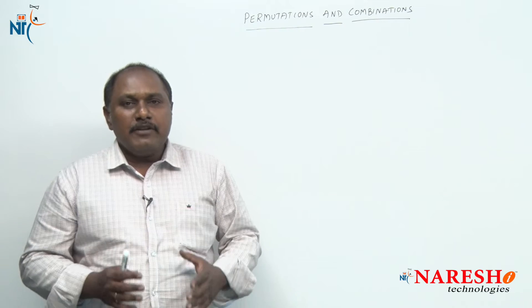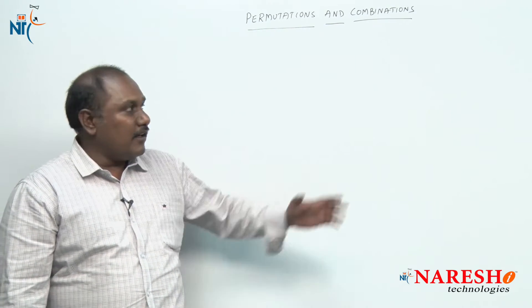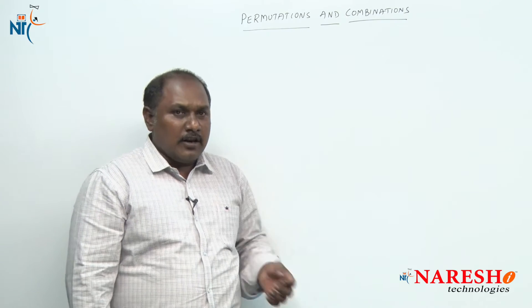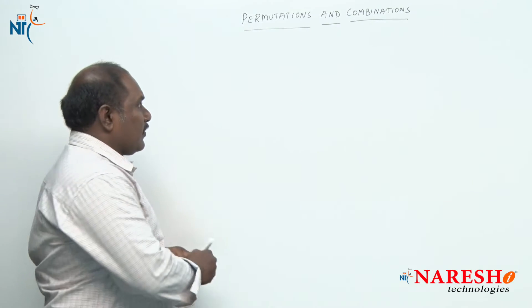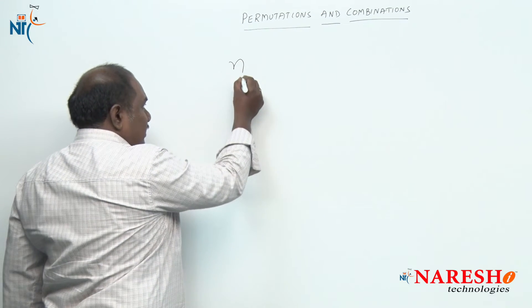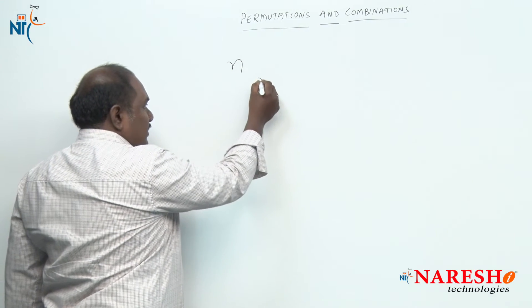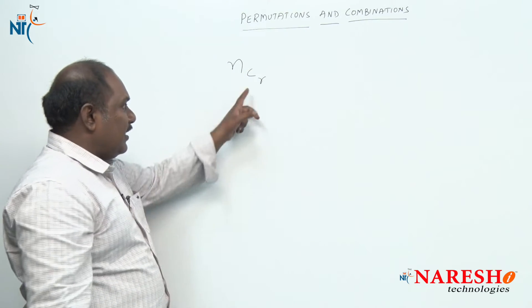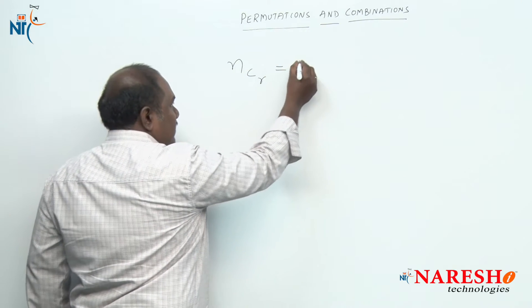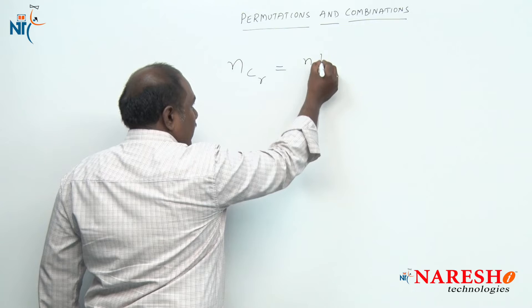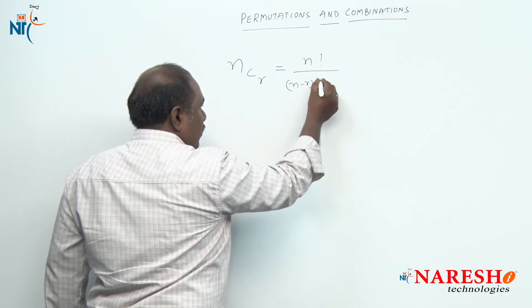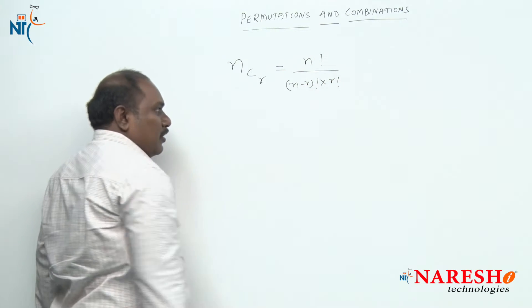In the previous five sessions, we have learned about combinations, that is selections. Let us recall: what do we mean by combination? Out of n different things, if we select r things, the number of selections is given by NCR, which is n factorial divided by (n minus r) factorial into r factorial.